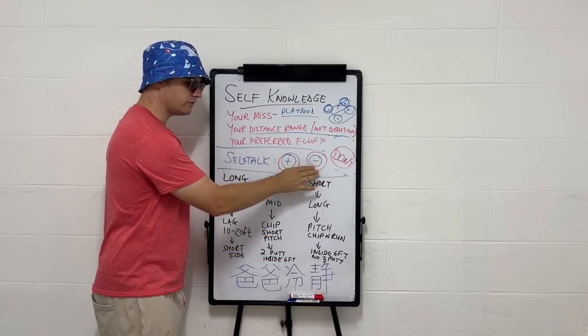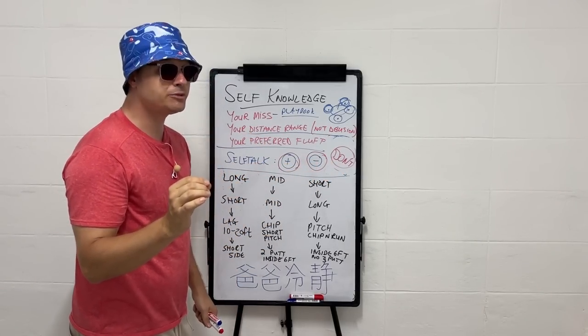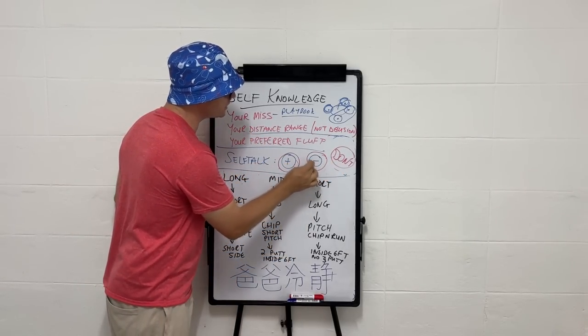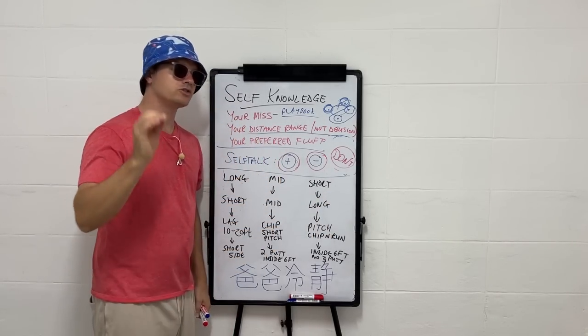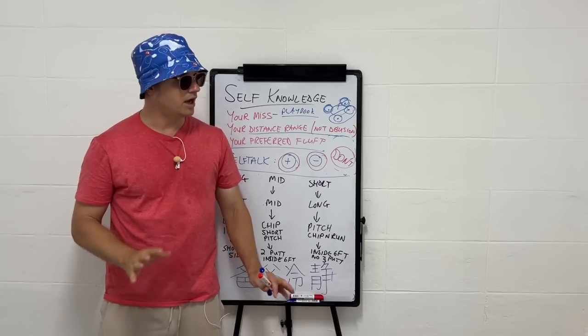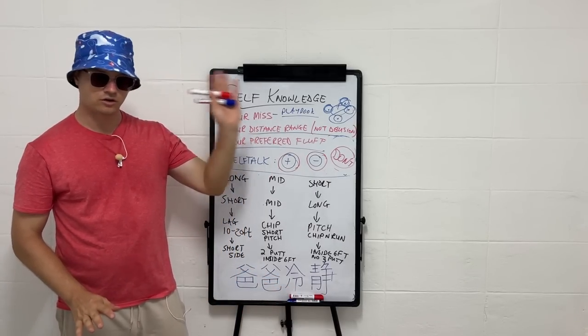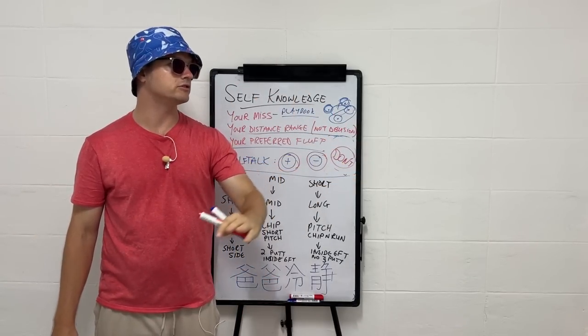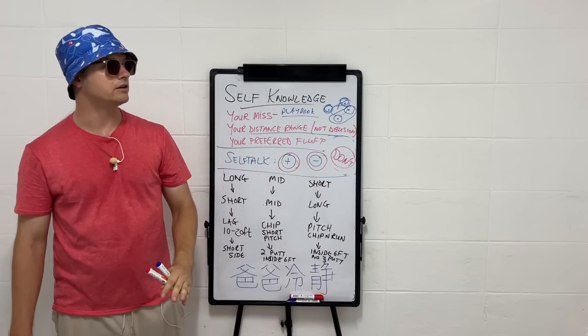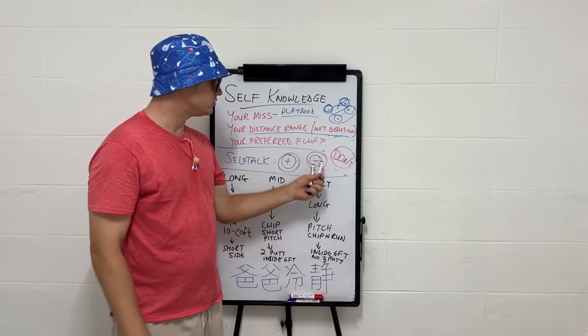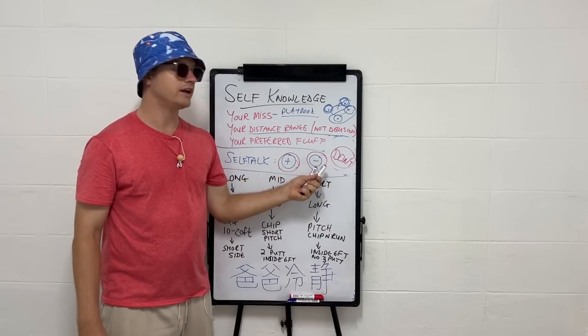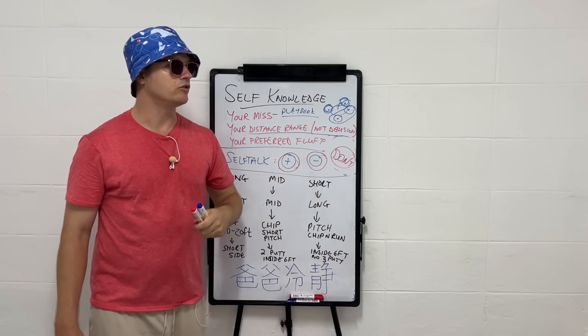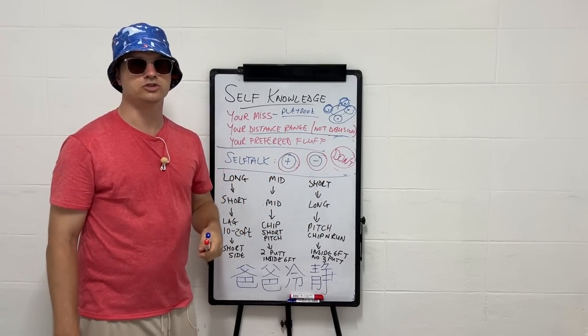If you do want to use the negative, this is a little tip. If you want to use the negative, use the negative in a way that benefits you. So if you get negative, I just don't want to hit it on the left edge to take that slope to filter to the hole to the right. I don't want to do that. And then do it. Don't do the real negative thing that you want to do. If you say don't go in the water short, you're going to go in the water short. If you say don't hit this to the back edge, I don't want to reach the back edge, you're going to reach the back edge.